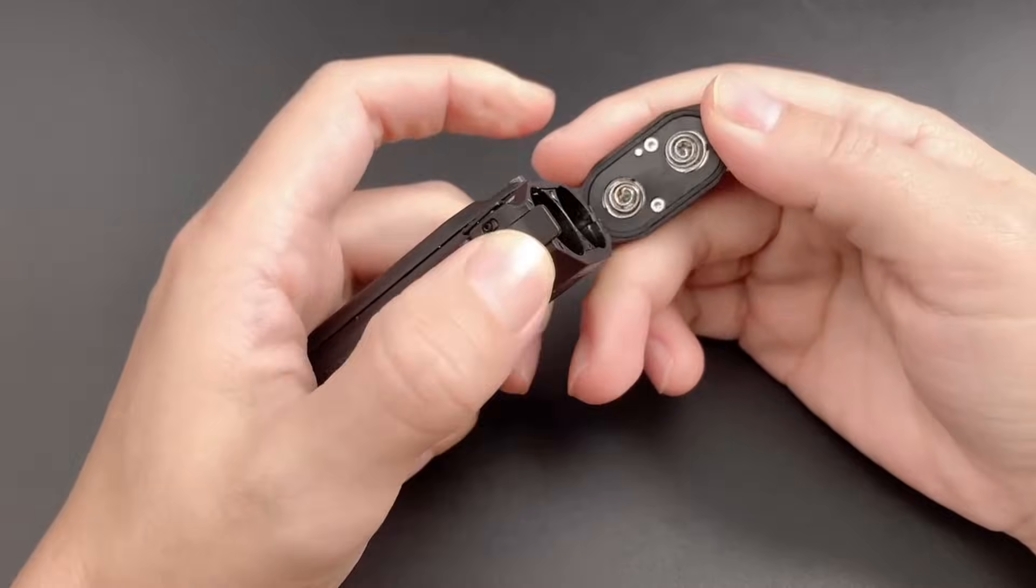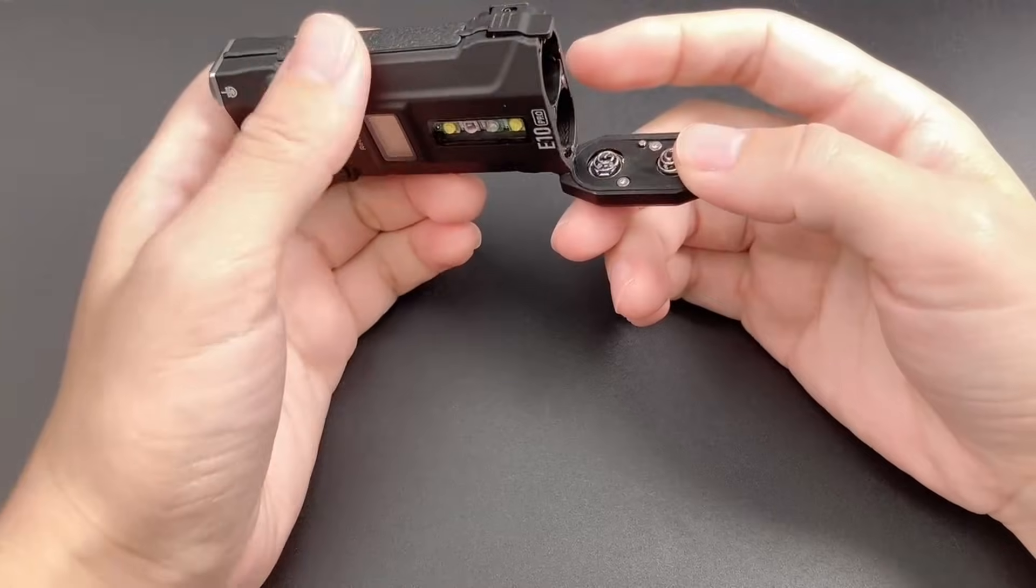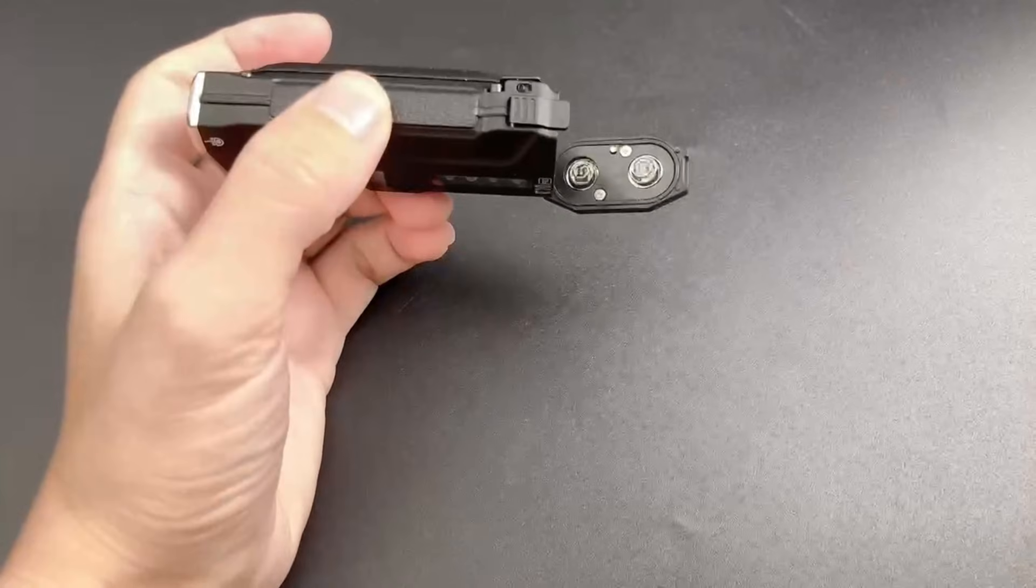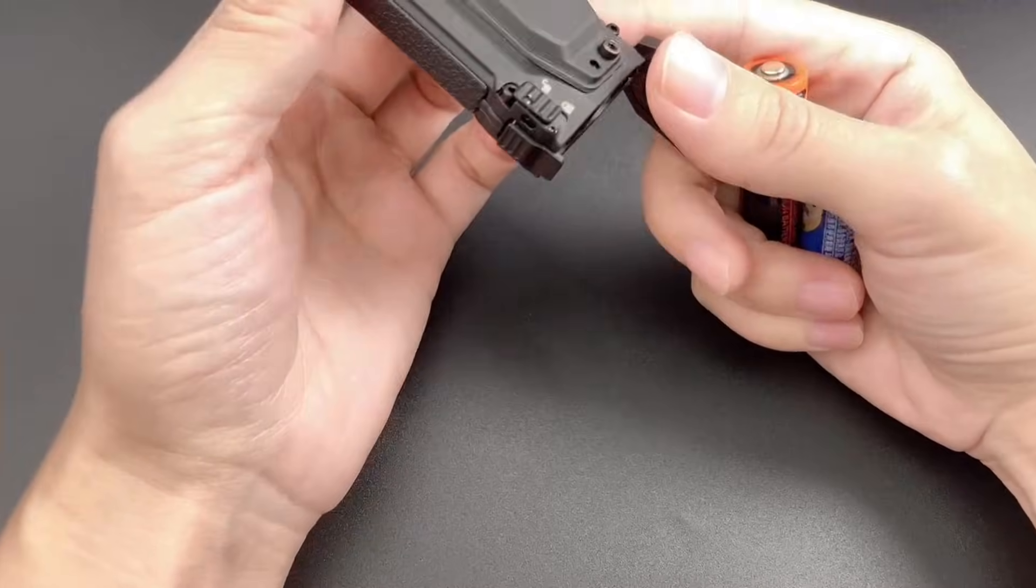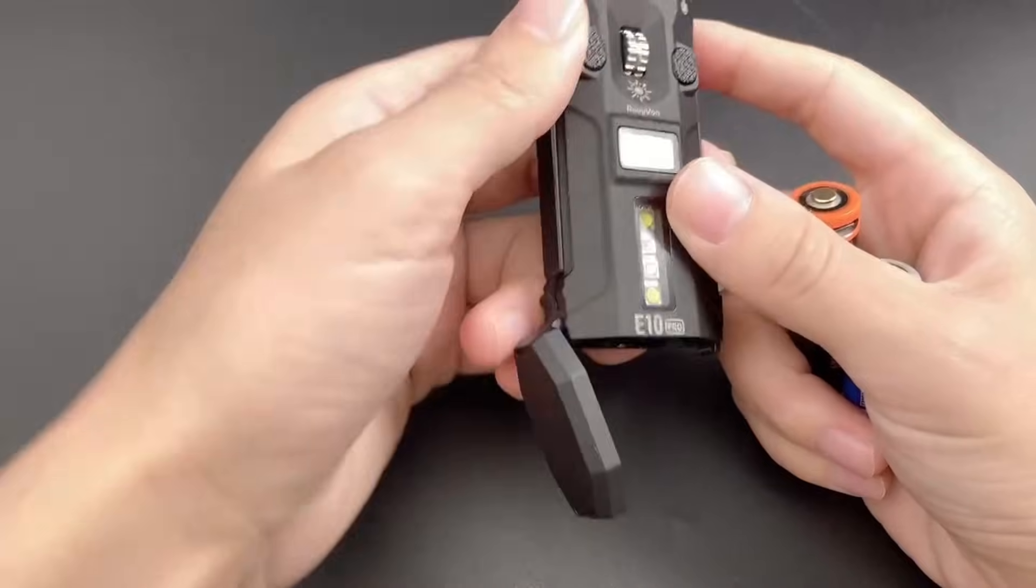For example, pairing a AA battery with a 14500 battery without any risk of damaging the batteries or the flashlight itself. Yes, you read that right.